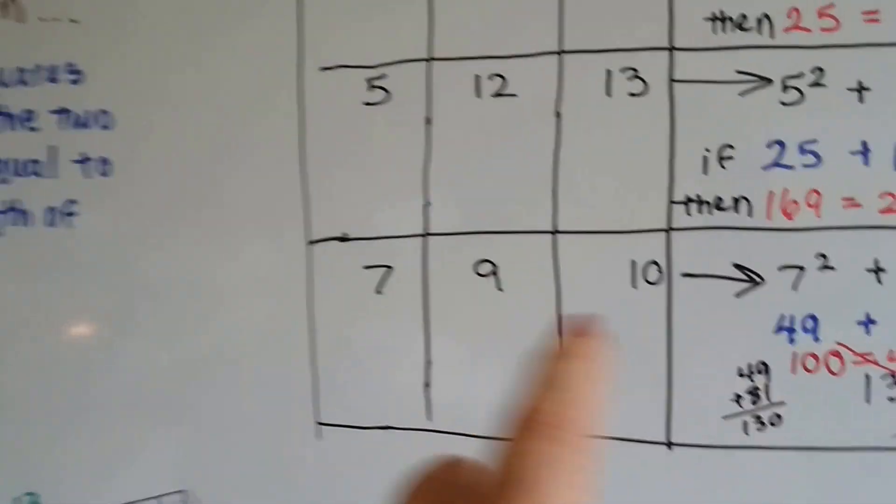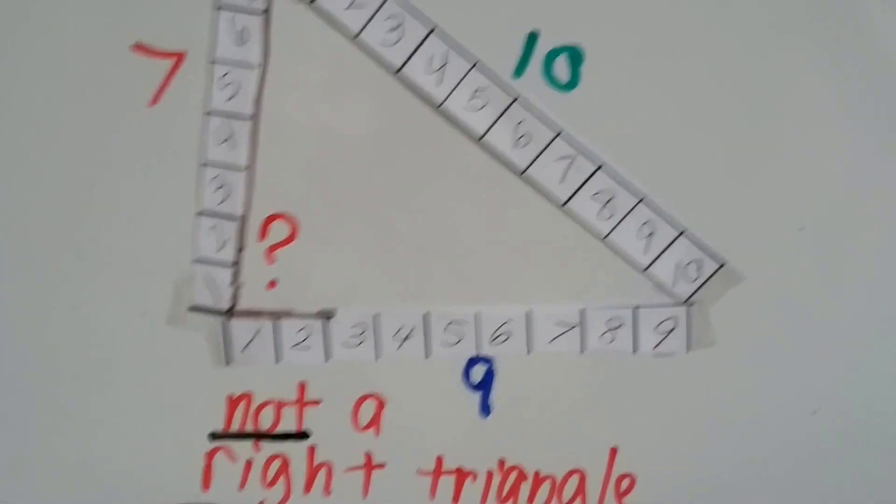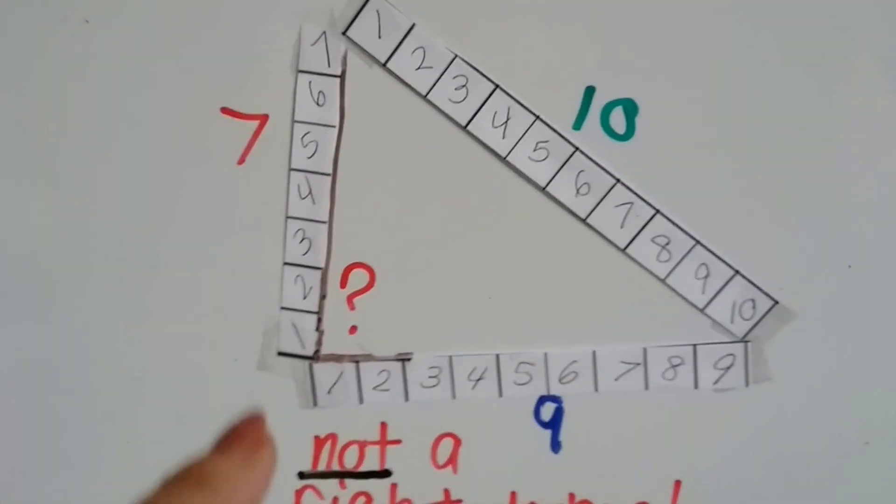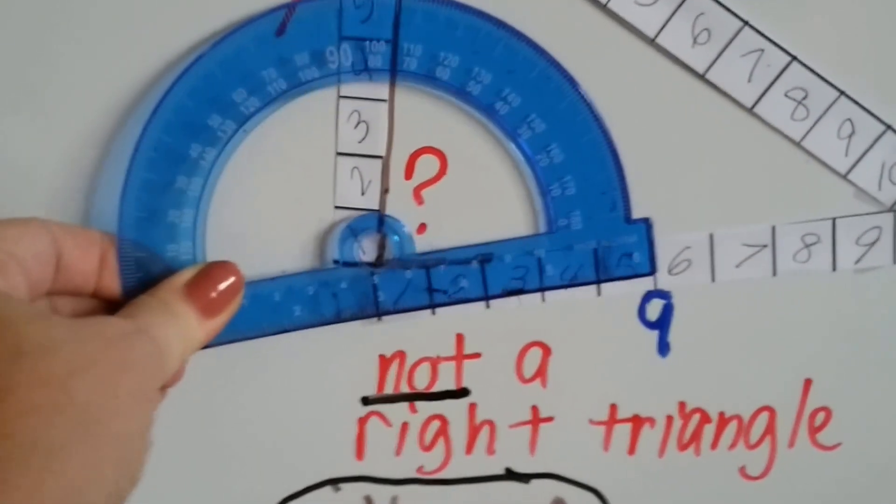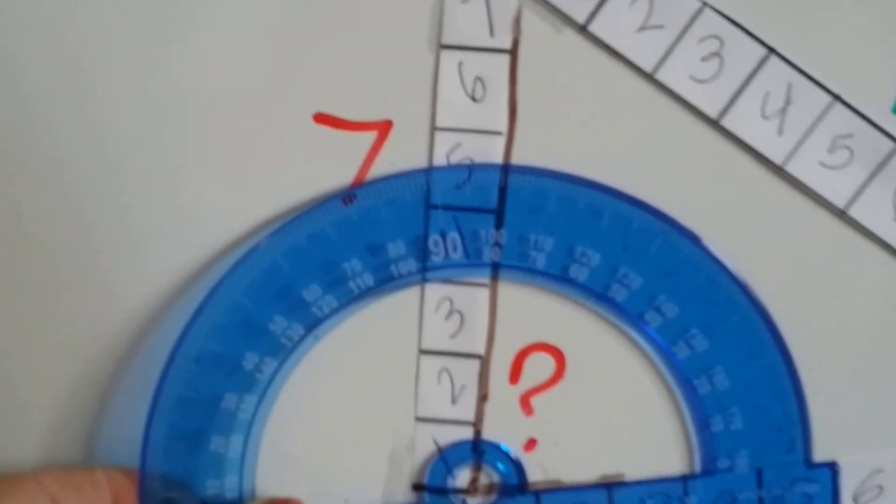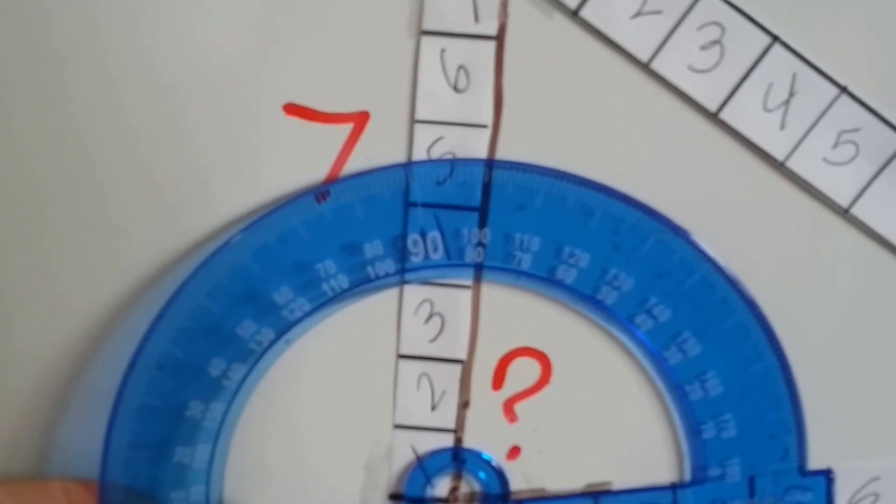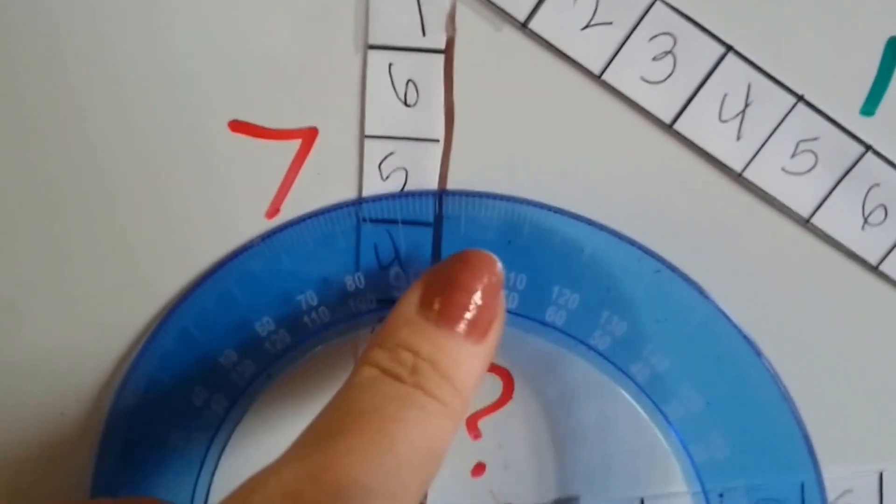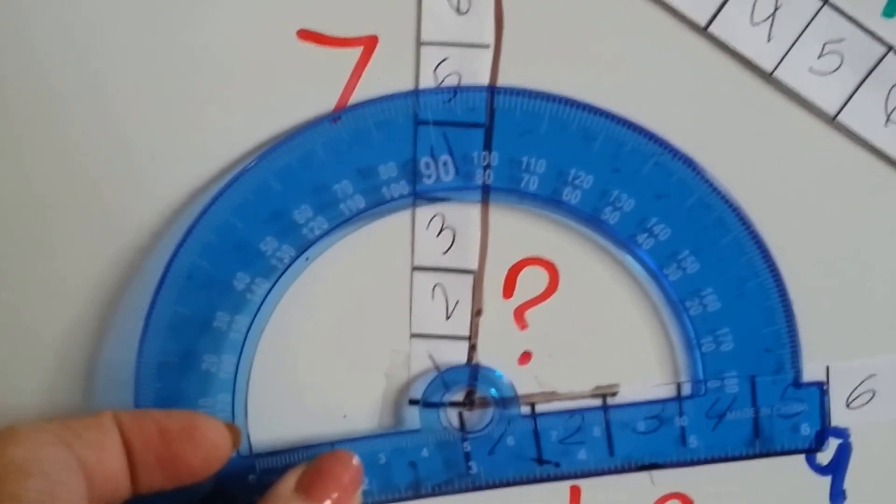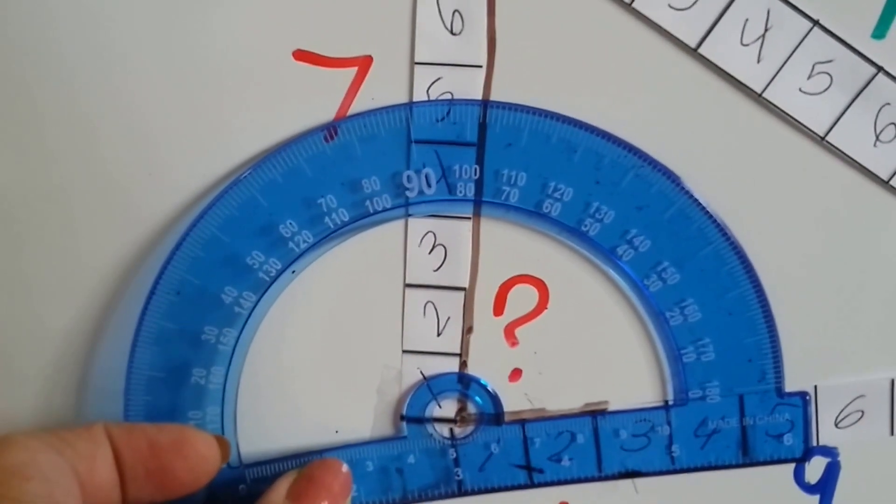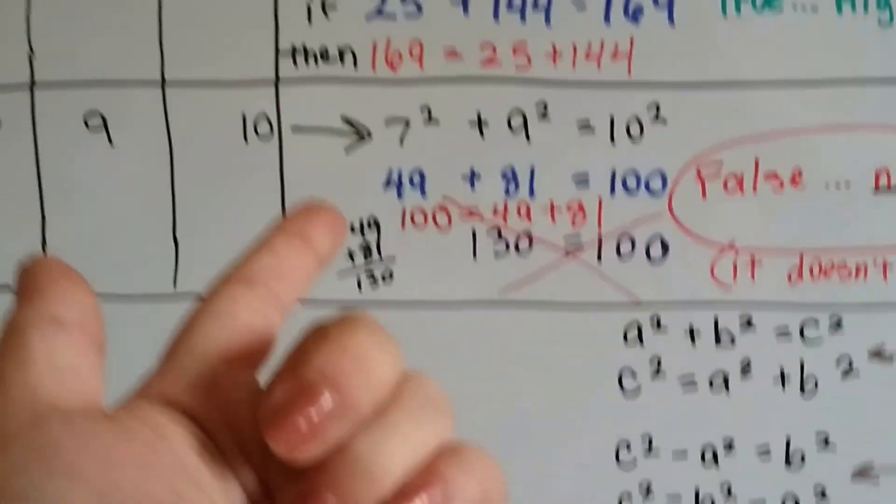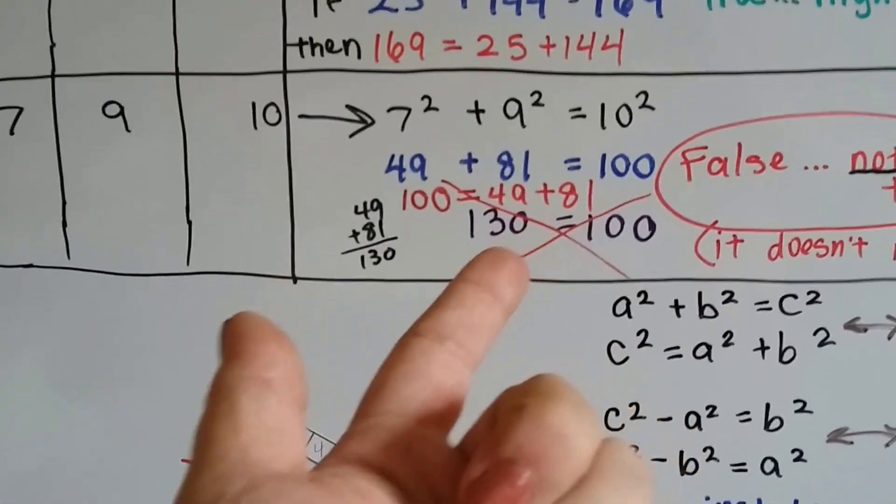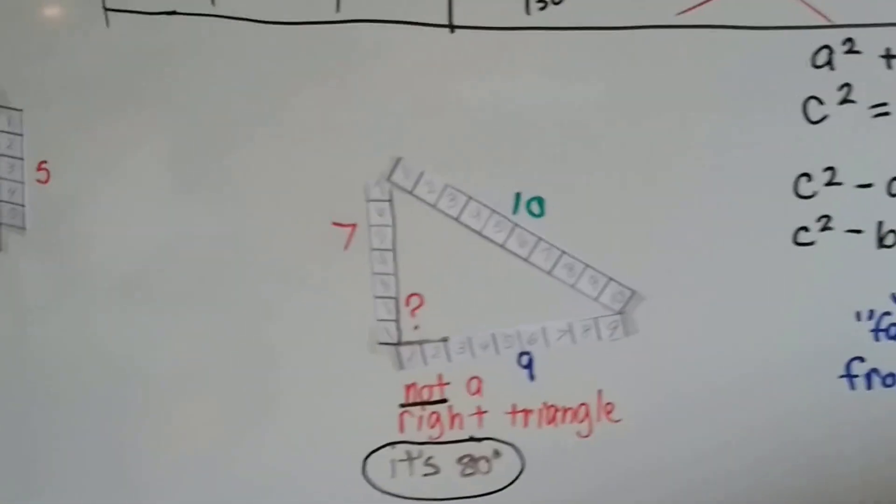But look what happens when we do the 7, 9, and 10 for a, b, and c. We've got this one, and that's not really a right triangle, is it? It's kind of leaning inward. And we can actually take our protractor and line up the circle along with the line right here. And look at that. We can see that the brown line is going through the 80 degree mark right here. See if you can see that? So this is not a right triangle. This is an 80 degree angle. So, it doesn't work. Just like it showed in the Pythagorean theorem and the converse, it doesn't work. It's not a right triangle.